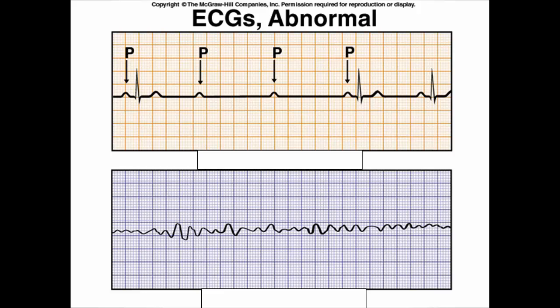Another arrhythmia shown on the top: if you said the QRS and T wave are missing, you'd be right. This is called a heart block. The P wave is there, so the SA node is working, but something is blocking the signal from getting from the SA node to the AV node. In several places the signal never got through the AV node, so there was no ventricular depolarization, and that's why we don't see a QRS complex — that's what's referred to as a heart block.